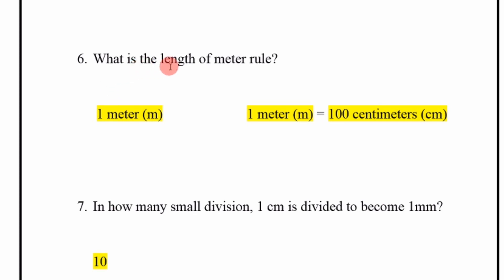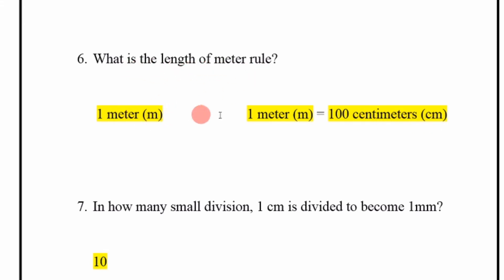What is the length of a meter roll? 1 meter. 1 meter is equal to 100 centimeters.